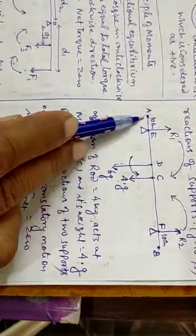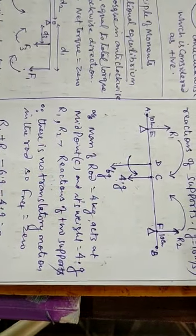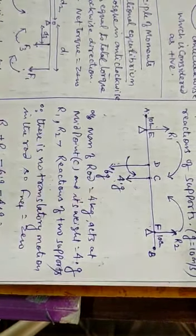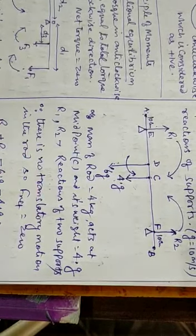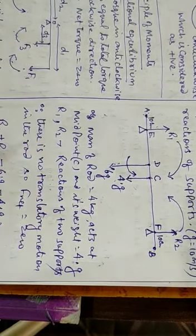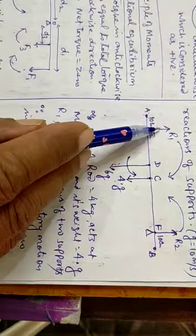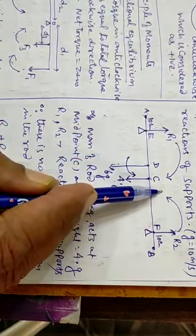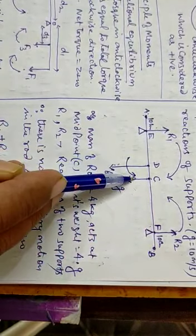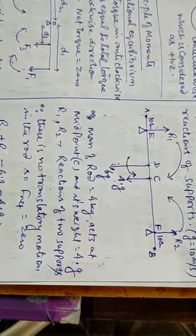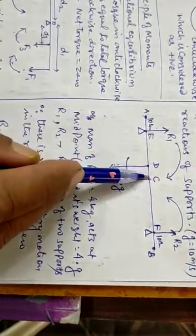Take point D or E or A to remove the torque of one force. Take a point to eliminate one of the reaction forces from the torque equation. The reason is that this will reduce the number of unknowns. R1 × EC, R2 × CF, and the weight force × DC are the torques involved.